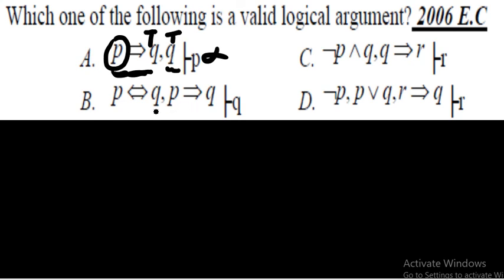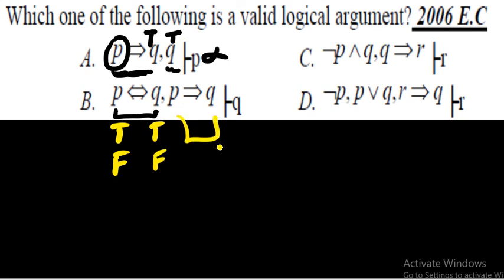For choice (b), the premise is p↔q (true) and p→q (true), with conclusion q. Since the biconditional is true, p and q must have the same truth value — either both true or both false. So q could be true or false; we cannot conclude it is always true. Therefore this argument is also invalid.